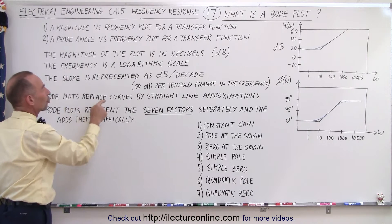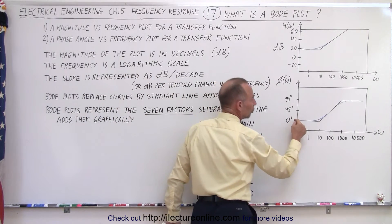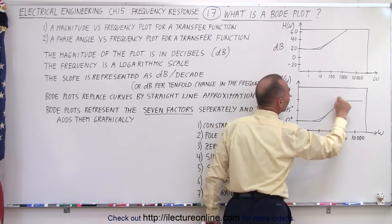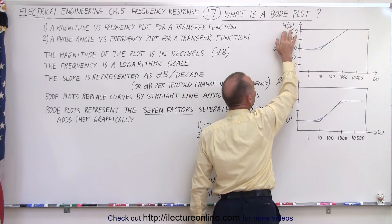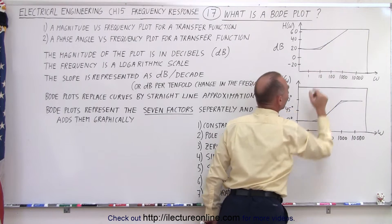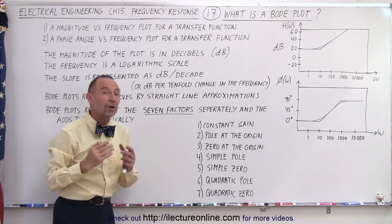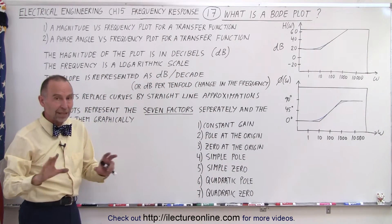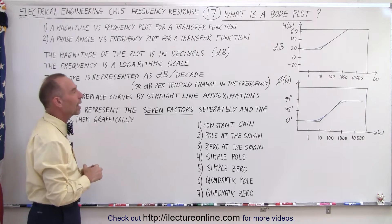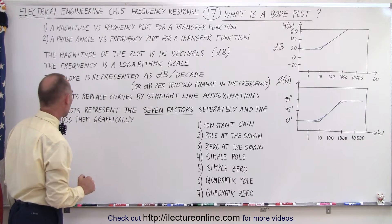Bode plots replace curves with straight-line approximations — that's an important characteristic. Notice the little blue lines here: the real relationship between phase angle and frequency would follow those curves, and similarly the real relationship between magnitude and frequency would follow a curve. But Bode plots replace everything with straight-line approximations. Most of the time that's plenty sufficient, though we'll see some examples where we need to take the approximation into account. Generally, we can simply use the straight-line approximations.